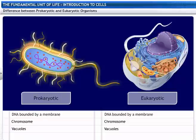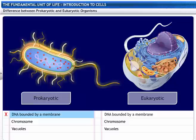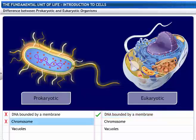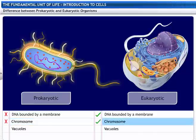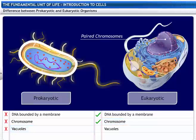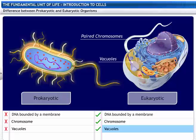Let's see the difference between prokaryotic and eukaryotic organisms. Prokaryotic DNA is not bounded by a membrane and is called the nucleoid, while eukaryotic DNA is bounded by a nuclear membrane. Prokaryotes have a single, circular DNA, while eukaryotes have DNA in paired chromosomes. Prokaryotes do not have vacuoles, while eukaryotes do have vacuoles.